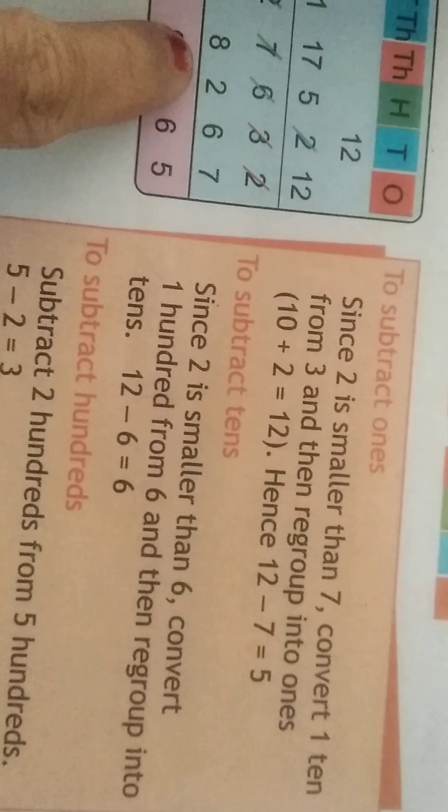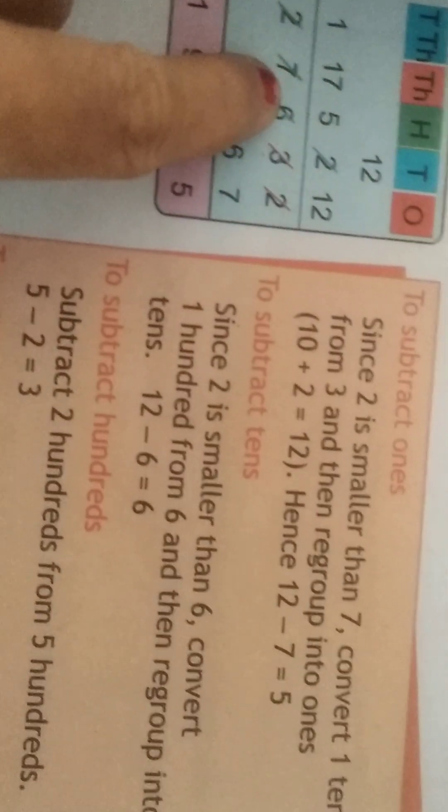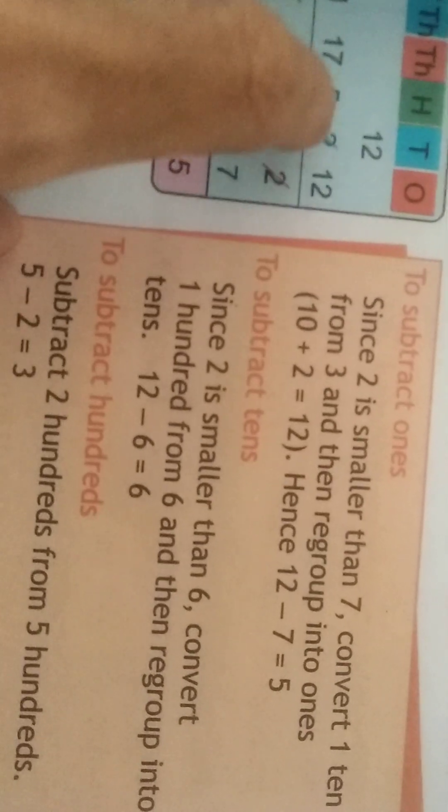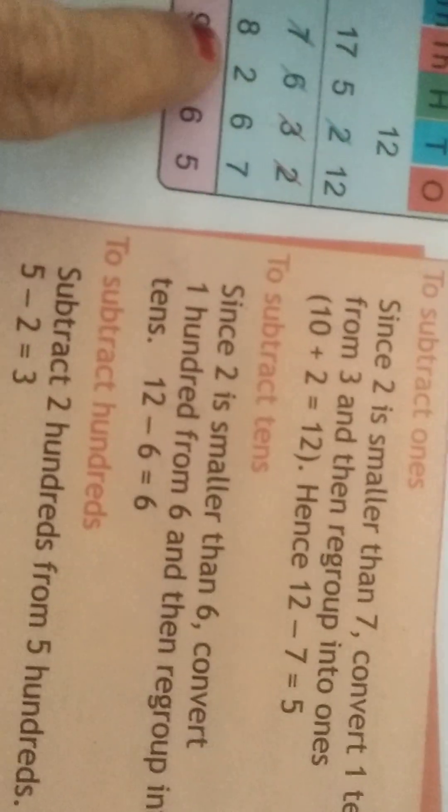Then in the hundreds column, subtract 2 hundreds from 5 hundreds. Here 6 hundreds had 1 hundred taken to the tens column, so it will become 5. 5 minus 2 is 3.